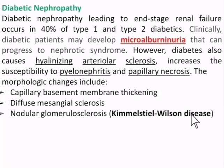Diabetic nephropathy leading to end-stage renal failure occurs in about 40% of type 1 and type 2 diabetics. Clinically, the first presentation is microalbuminuria, which then progresses to nephrotic syndrome. Diabetes also causes hyalinizing arteriolar sclerosis, increased susceptibility to pyelonephritis, and increased susceptibility to papillary necrosis.